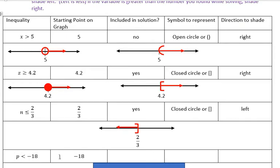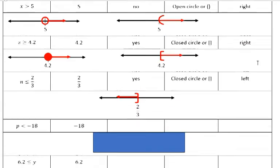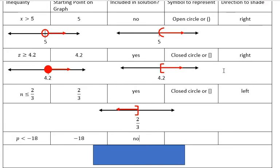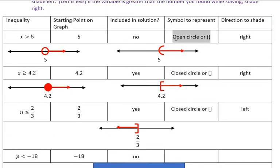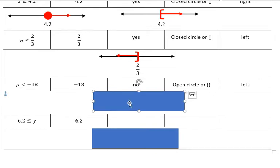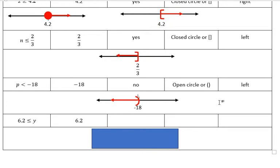For the next one, p is less than -18. Is -18 included in the solution? No, because there's no equal to part. So we have an open circle or parentheses. Which way does it shade? Since it's less than, it shades left — less is left. So we should see a starting point of -18 with a parenthesis opening to the left, and that's what we have.